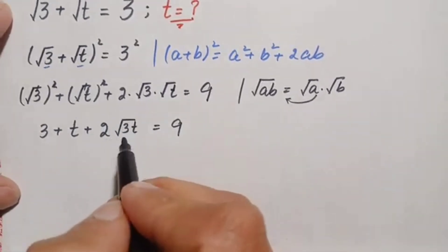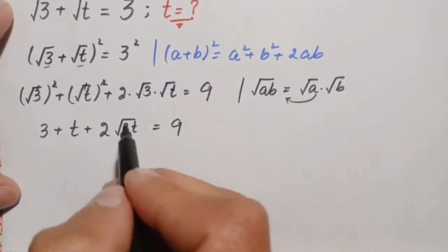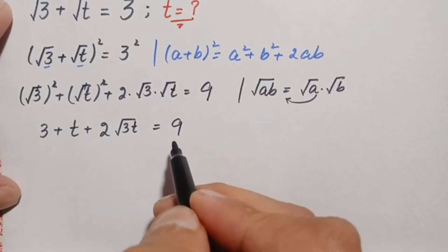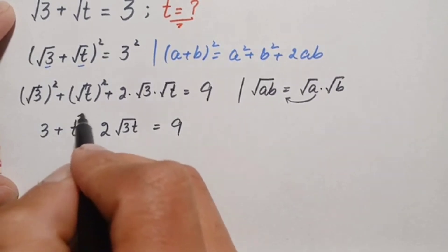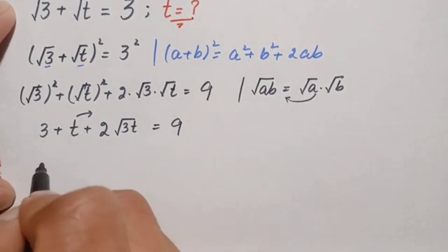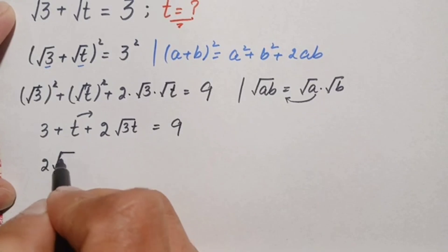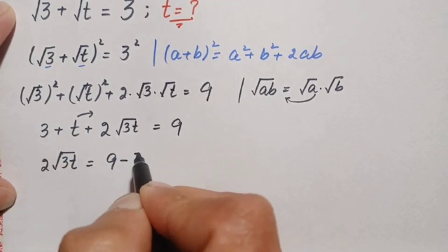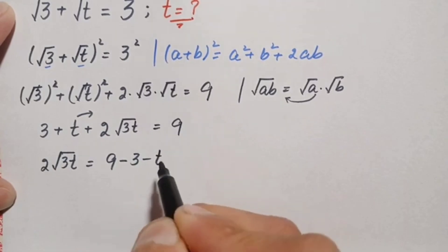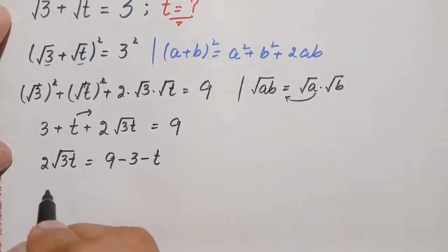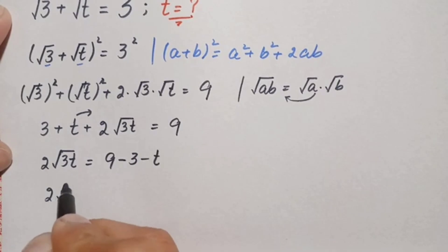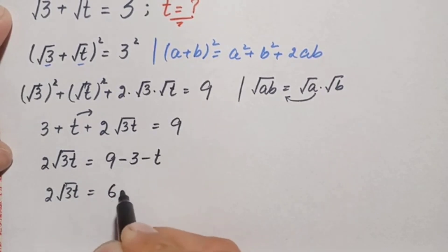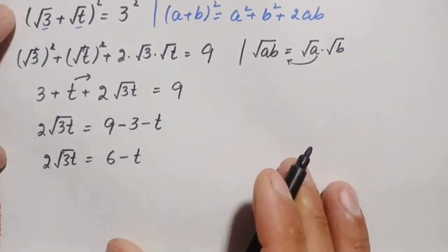Here we will try to eliminate the square root from t. We leave the square root term alone and move the other terms to the right hand side. Moving 3 and t to the right gives: 2 times square root of 3t is equal to 9 minus 3 minus t. Simplifying the right hand side: 2 times square root of 3t is equal to 6 minus t.